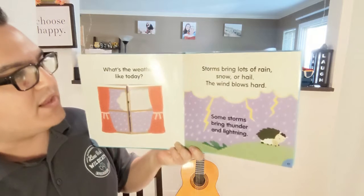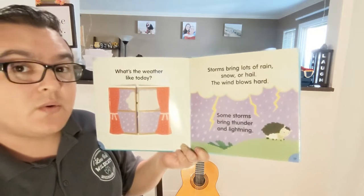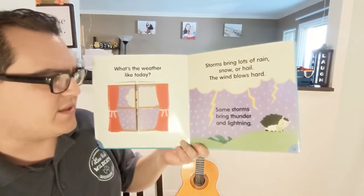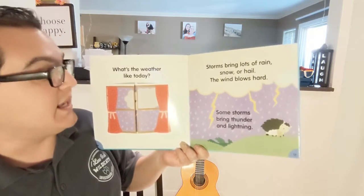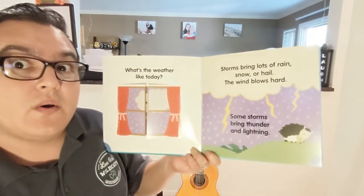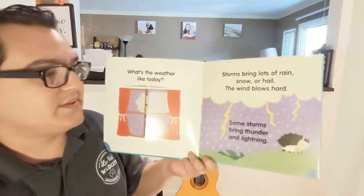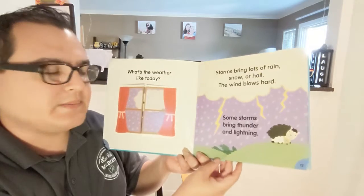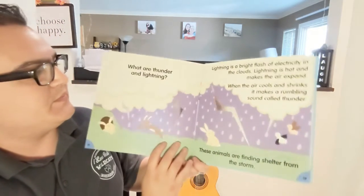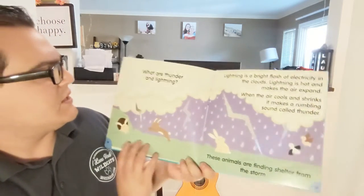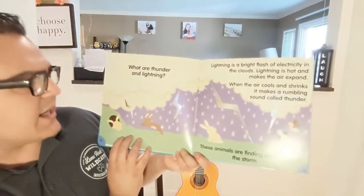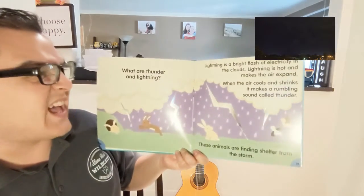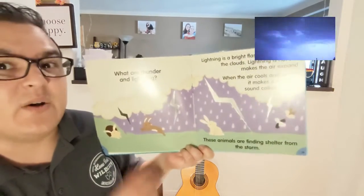Storms bring lots of rain, snow, or hail. Some storms bring thunder and lightning. Lightning is a bright flash of electricity in the clouds.